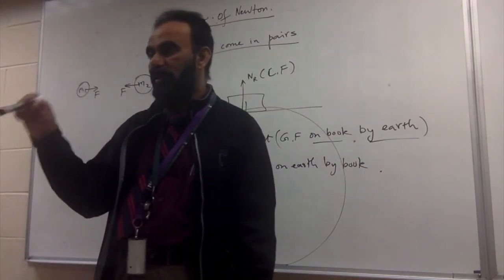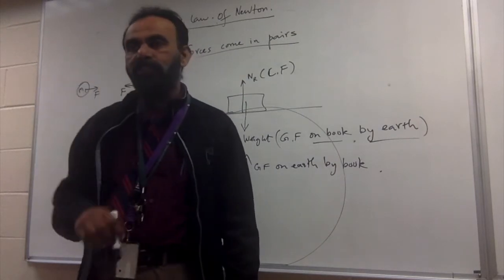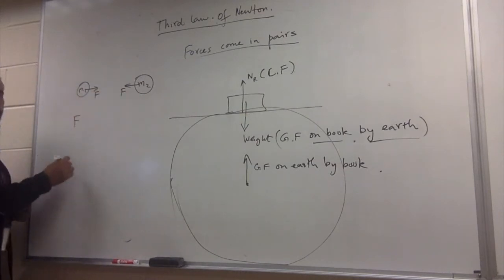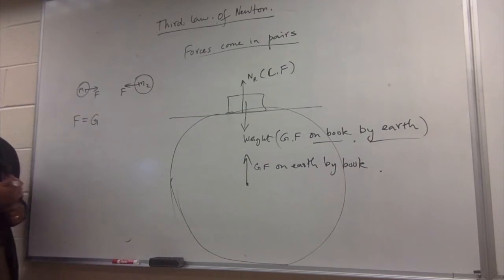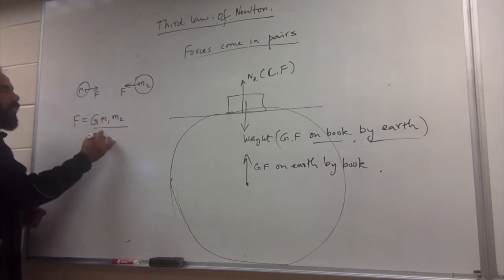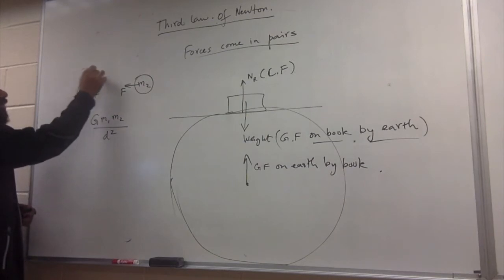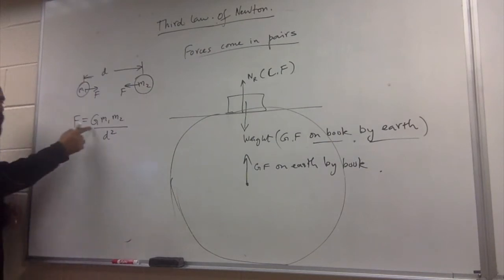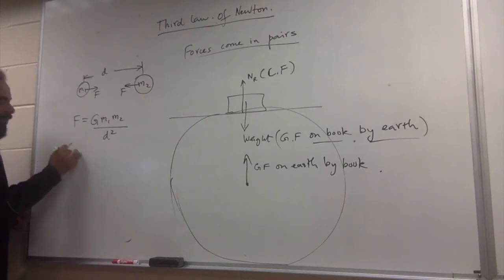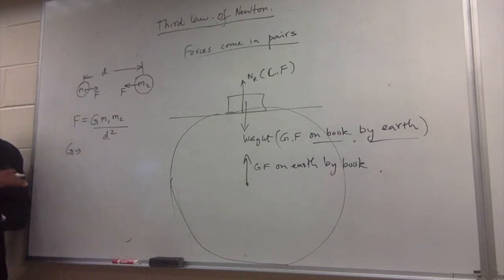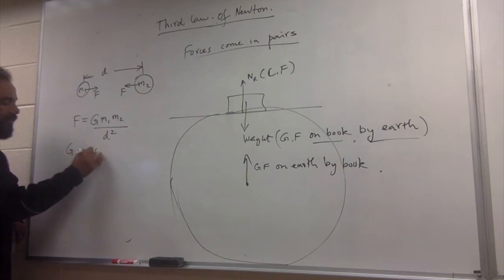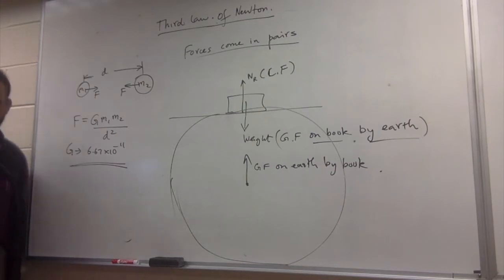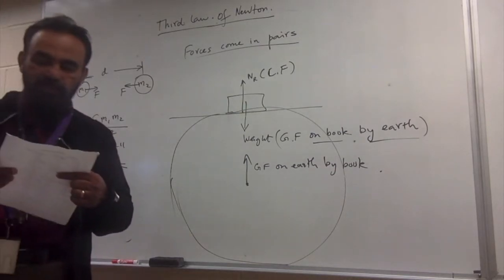The equation for gravitational force is F = G × m1 × m2 / d², where d is the center-to-center distance between the two masses. Capital G is the Universal Gravitational Constant — it is constant throughout the universe and its value is 6.67 × 10⁻¹¹. This constant will be provided on your data sheet.